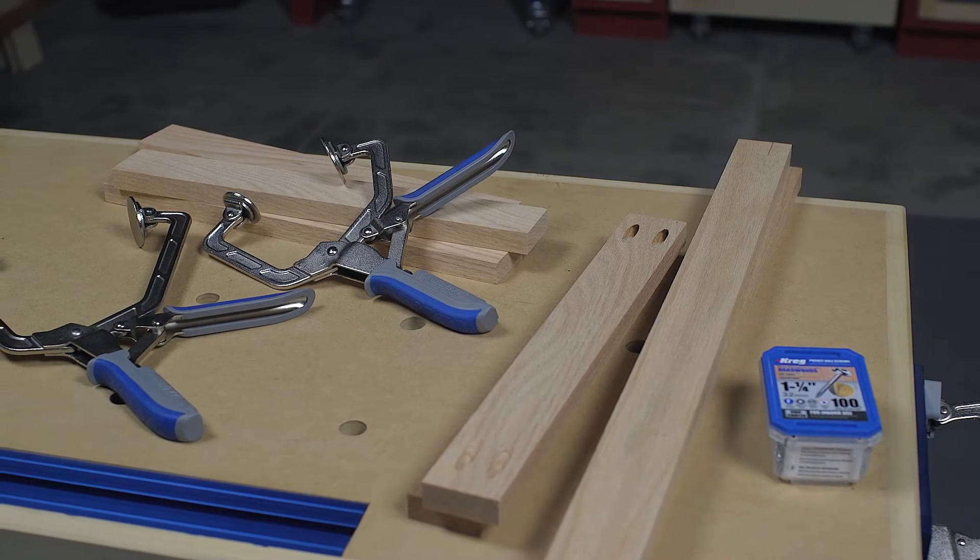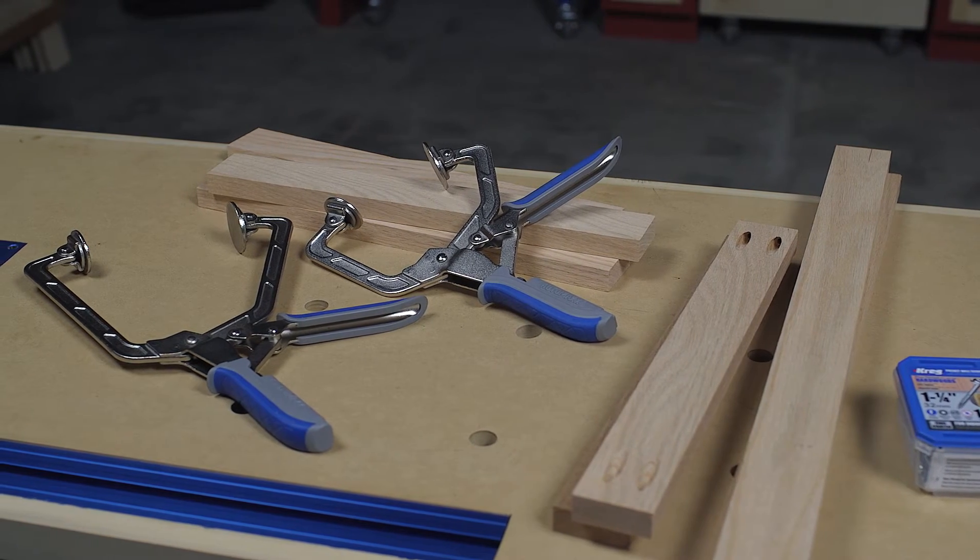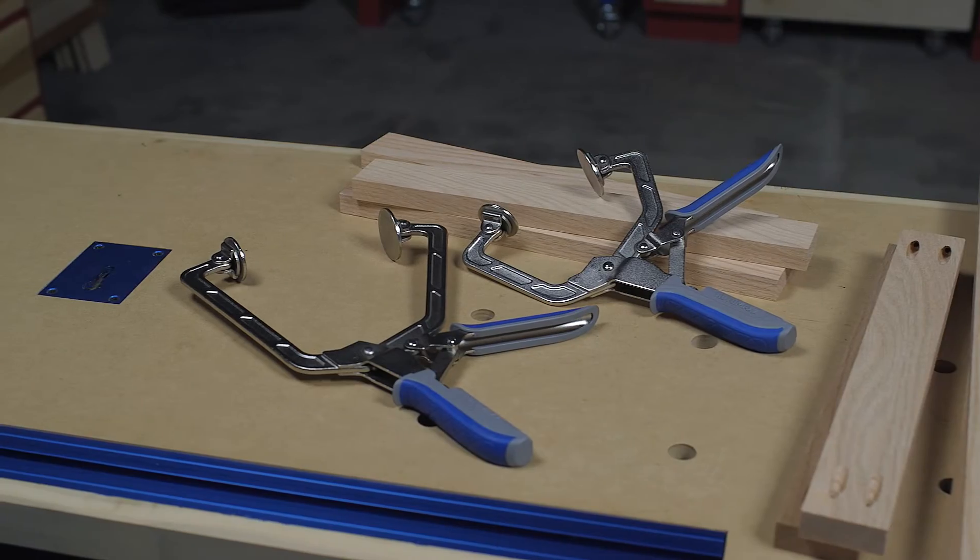Wood project clamps are available in two sizes. One has a three-inch reach and holds materials up to three-inch thick, while the other has a six-inch reach and holds materials up to five-inch thick.